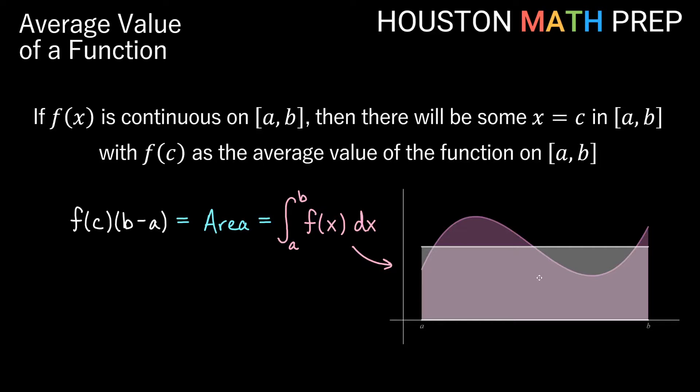The formula for the area of this rectangle would be the width times the height. Well, the width would just be b minus a, the right side minus the left side, that would be how far across it is. And then I'm saying there's some x value in here that is the height of this rectangle, and that height is going to be f(c).